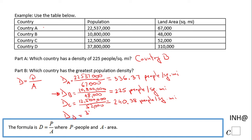For the last country, country D, the density is 37,800,000 divided by 310,000, which gives 121.94 people per square mile.